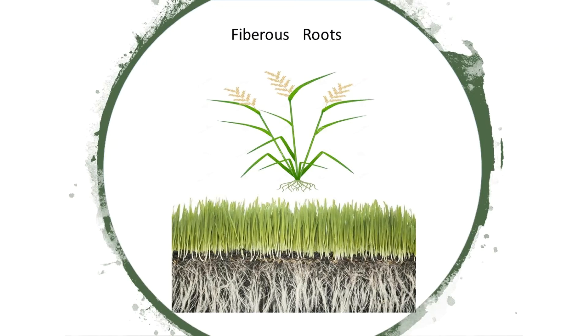Fibrous roots have many thin roots and look like a hair-like structure. Examples are grass, onion, wheat and rice.